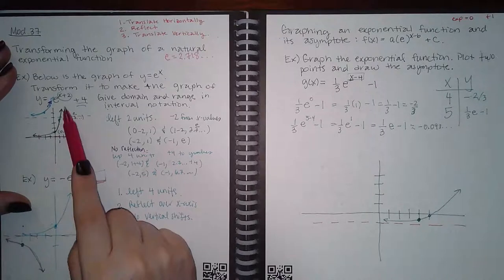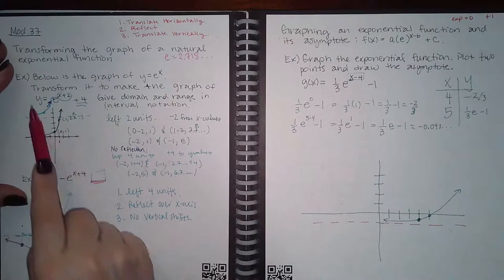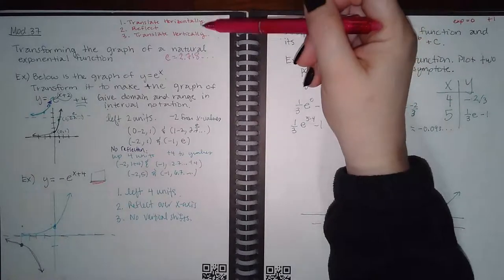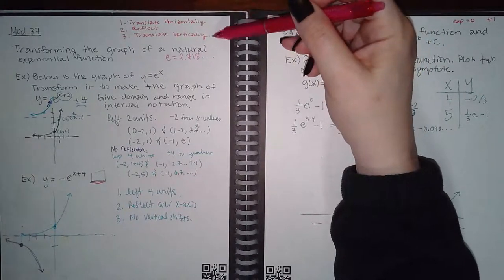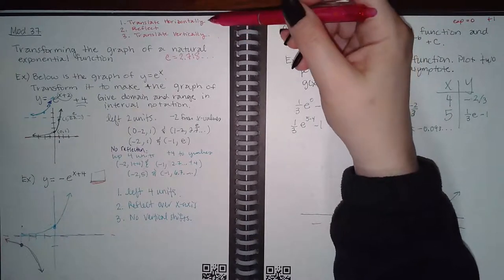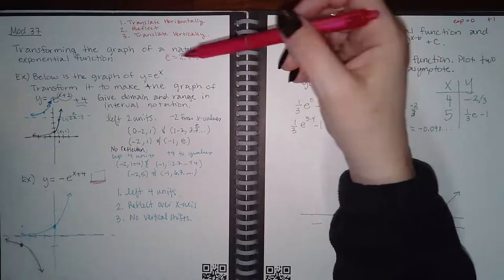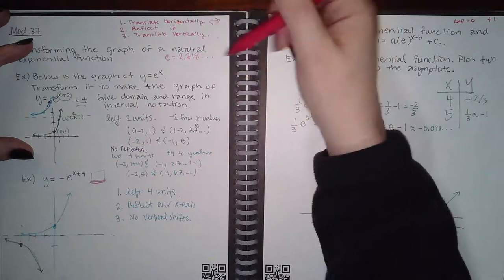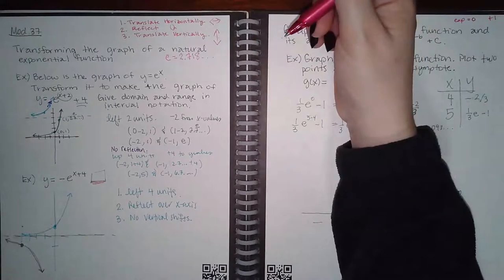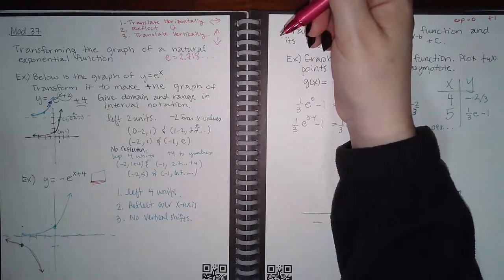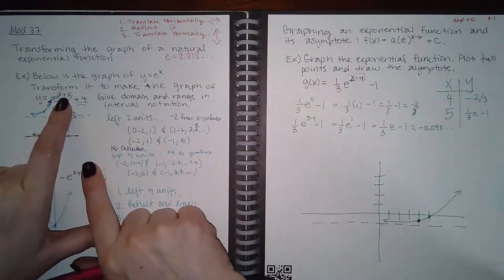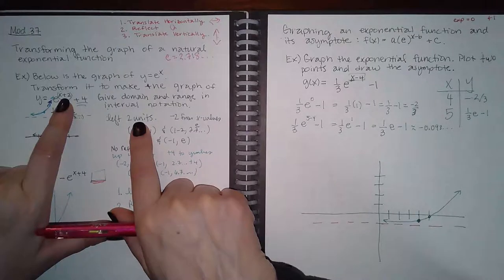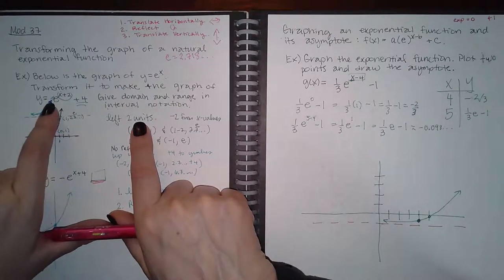Now let's see how we transform the graph. We have to follow the rules in order: first, translate horizontally — move left or right; then reflect (flip things over); then translate vertically — shift up or down. You must do them in that order to ensure the graph is in the correct position. Looking at this problem, the exponent has x plus two, so we're going to shift left two units.